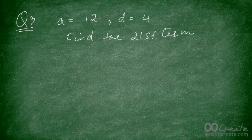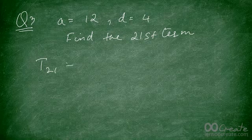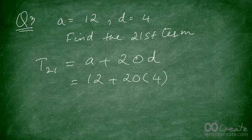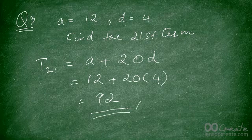Try this: a = 12, d = 4, find the 21st term. The 21st term is a + 20d = 12 + 20 × 4 = 12 + 80 = 92. So that's your answer.